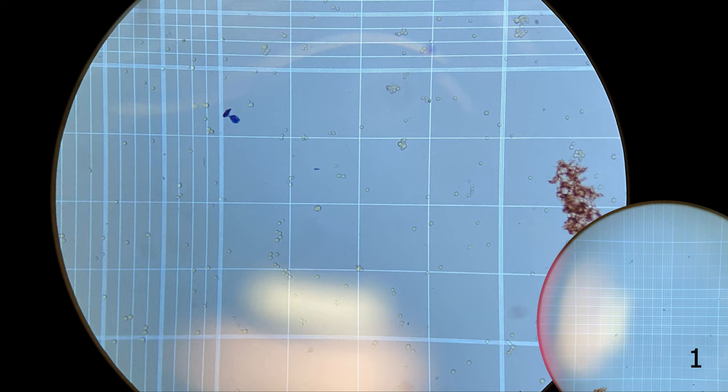I do want to point out on the far right side, there is a piece of fluff, probably from the Kim Wipe. The Trypan Blue did stain it and now it is on our slide. Thankfully, it's not covering the P-square.